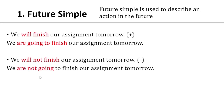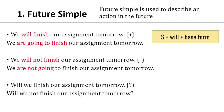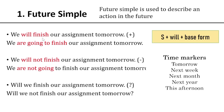And this is the question form: 'Will we finish our assignment tomorrow?' or 'Will we not finish our assignment tomorrow?' This is the interrogative form — we just move 'will' to the beginning of the sentence. So the form of future simple is: subject + will + base form. Here we have subject 'we,' 'will,' and the base form of 'finish.'